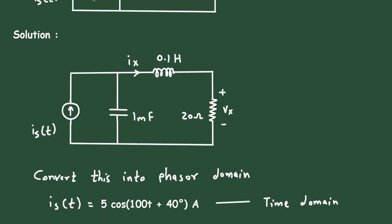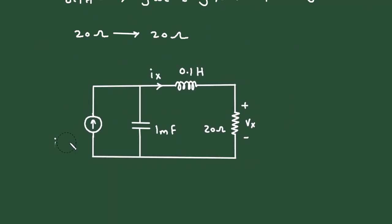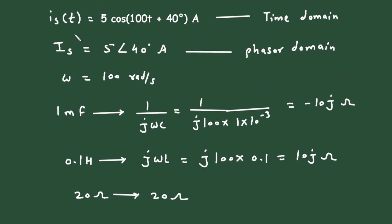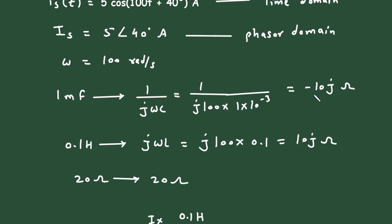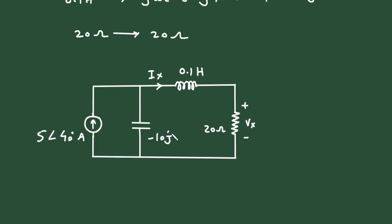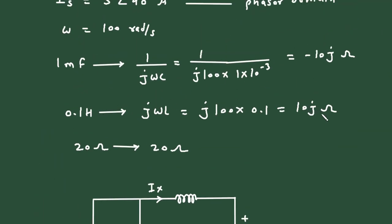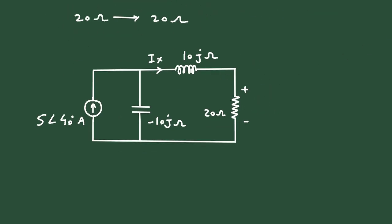Now let us copy the phasor domain circuit. Is(t) changes to capital Is = 5∠40° ampere. Ix becomes capital Ix. The 1 millifarad capacitor changes to -10j ohm, the 20 ohm remains the same, the 0.1 henry inductor changes to 10j ohm, and small Vx changes to capital Vx.